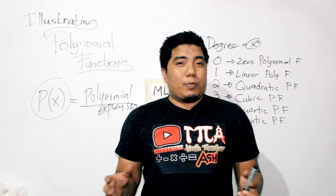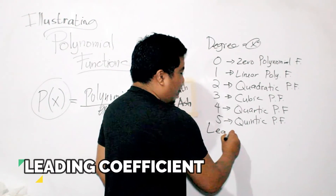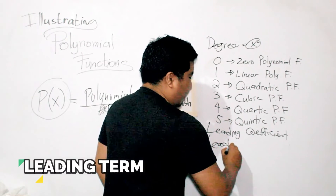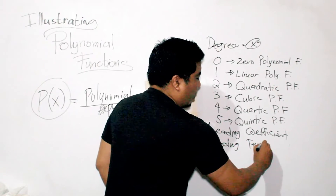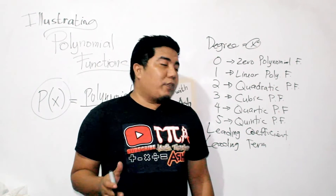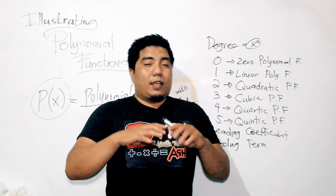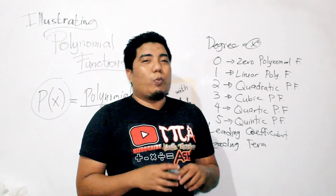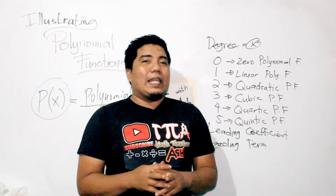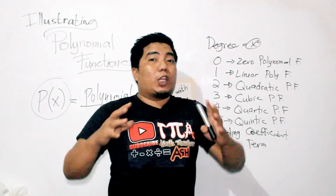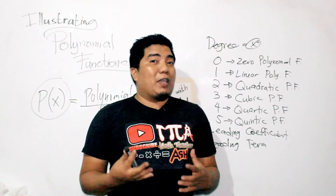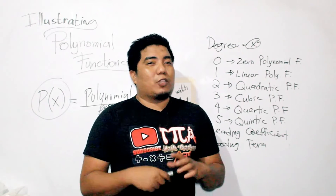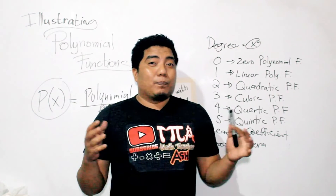Another part of a polynomial function is known as the leading coefficient and the leading term. The leading coefficient is the number, or the coefficient, of the variable with the highest degree. The leading term is the actual term where the degree is found — it includes the variable with the degree and its leading coefficient, so the whole term is known as the leading term.